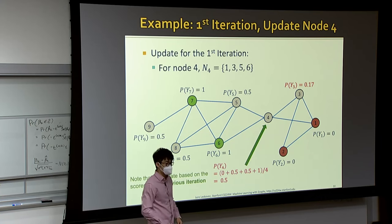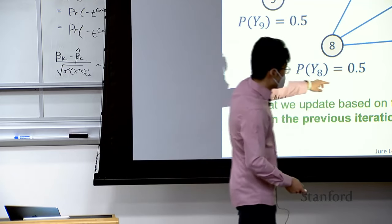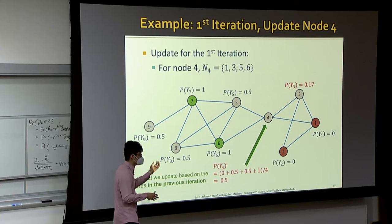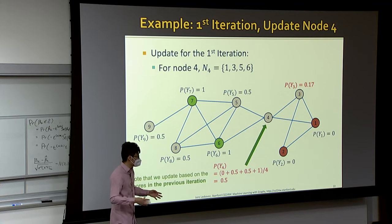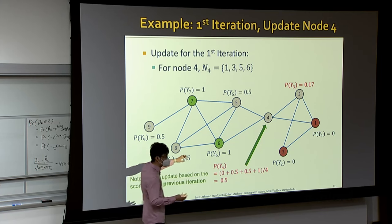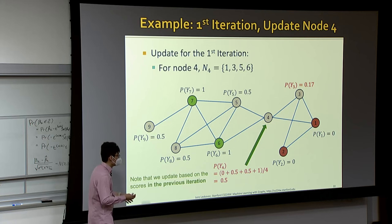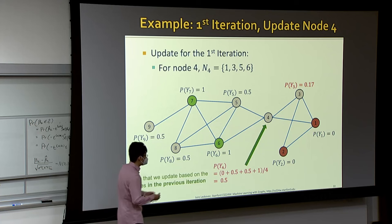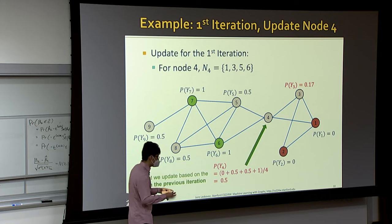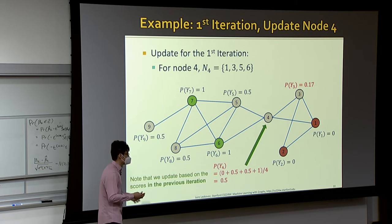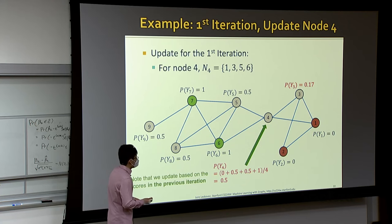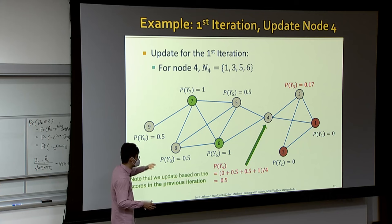A student asks whether using the current value rather than the previous iteration's value might be faster. The benefit of always using the previous layer's values is that you can parallelize computation — instead of one node at a time, you compute updated values for all nodes in parallel. The suggested sequential update also aligns with the homophily intuition and is a valid algorithm, but the parallel approach is what's introduced here.